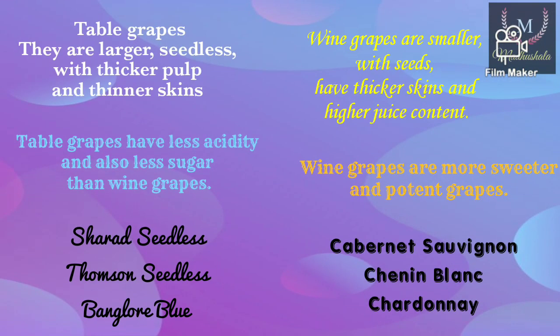As you know, wine is made from wine grapes, but what is the exact difference between table grapes and wine grapes? The grapes we commonly eat are table grapes. Table grapes are larger in size with thin skin and mostly seedless, while wine grapes are smaller, seeded, thick-skinned, and with high juice content. The acidity and sugar in grapes play an important role in winemaking.